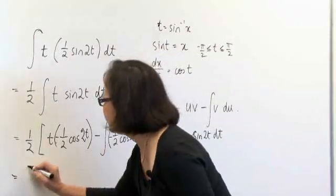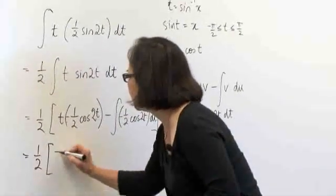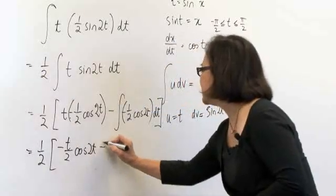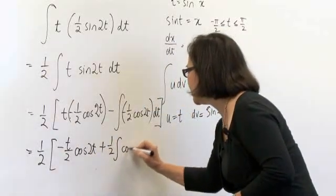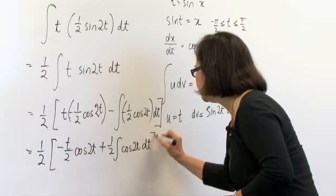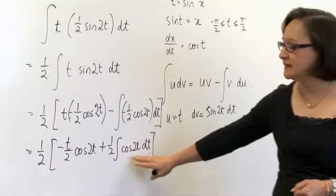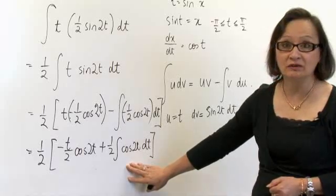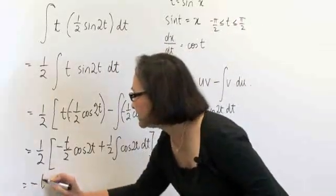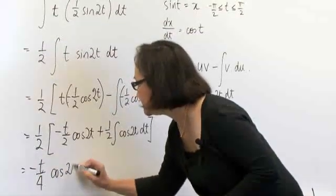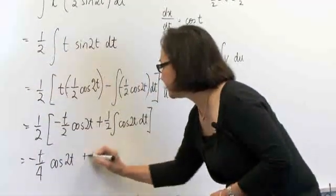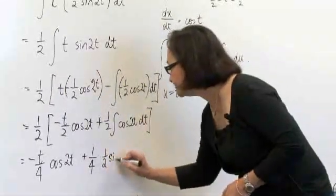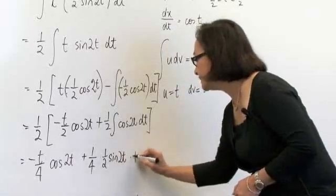And simplifying we get a half minus t on 2 cos 2t plus a half the integral of cos 2t dt. Now we can integrate cos 2t and we've completed the integral: minus t on 4 cos 2t plus a quarter. The integral of cos 2t is a half sine 2t plus a constant.